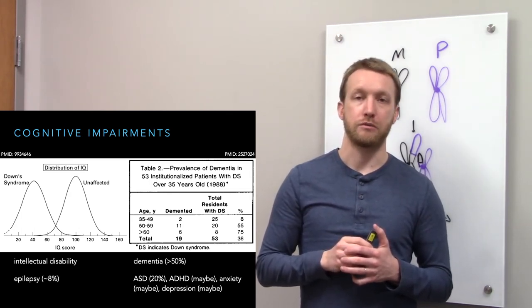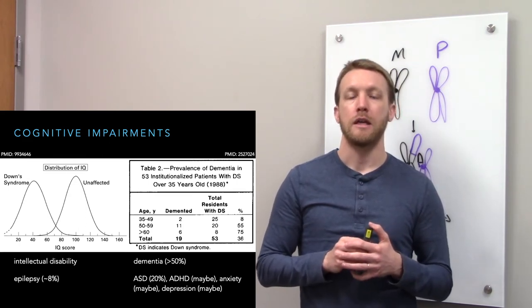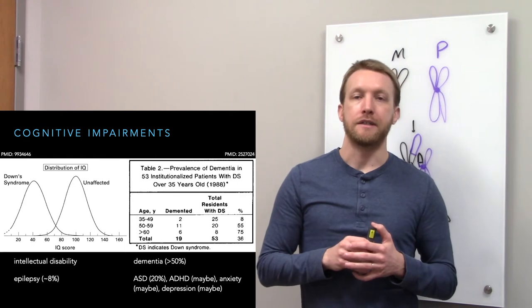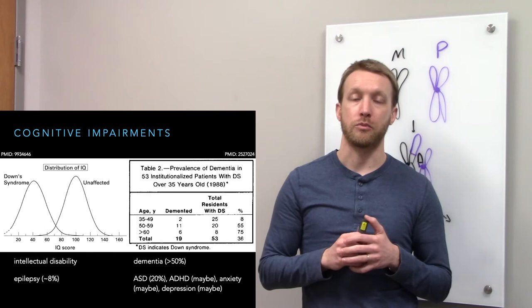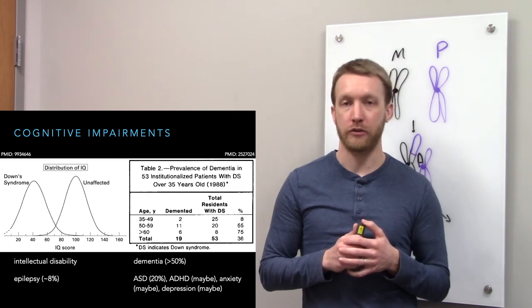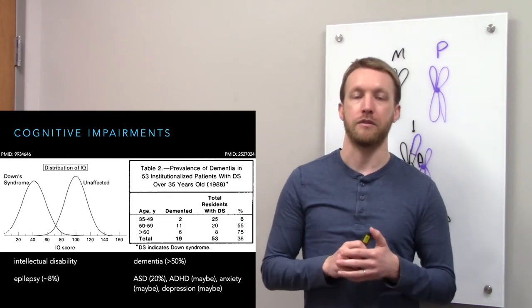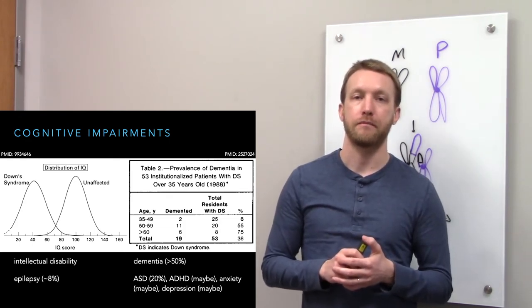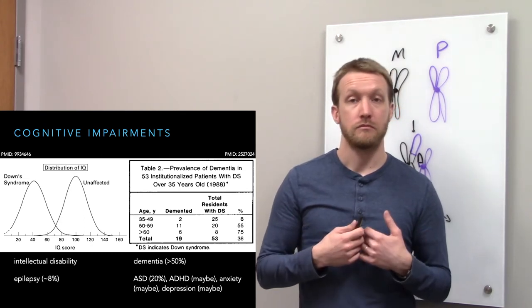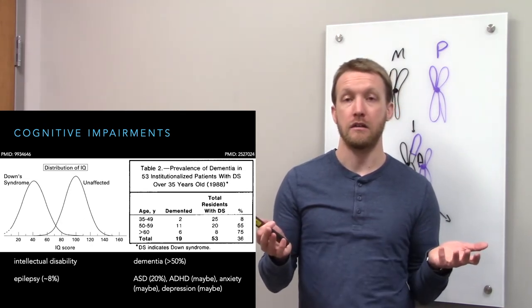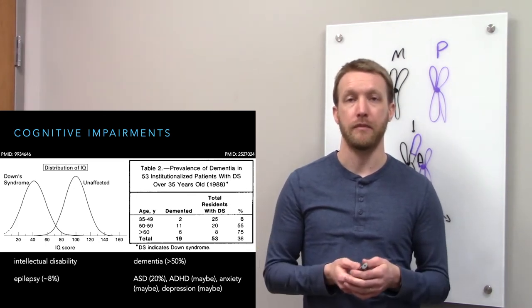There's also a reported increased risk of autism spectrum disorder. This seems to hold up. In the textbooks, you'll find an increased risk of ADHD, anxiety, and depression also reported for people with Down syndrome. However, recent evidence refutes this. Depending on how life goes, all of us have a risk of anxiety and depression. It doesn't seem to be any higher in people with Down syndrome.